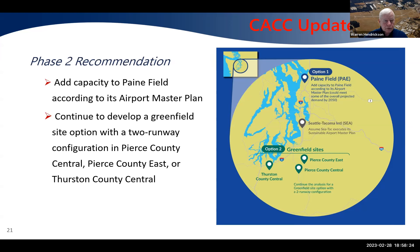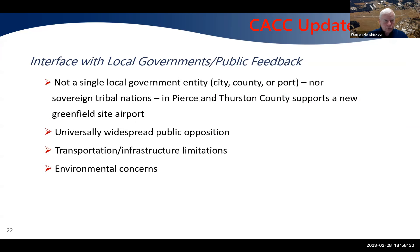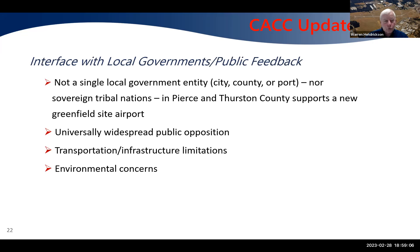Once the CAC placed study circles on the map, significant public attention followed — communities realized the organization was serious about identifying a location. The six-mile study circles represent areas within which a 3,100-acre site might be found, and over the last three to four months, the CAC has found that not a single local government has expressed willingness to be involved.